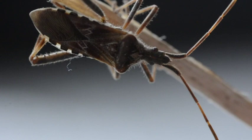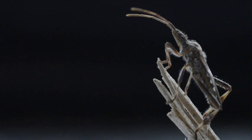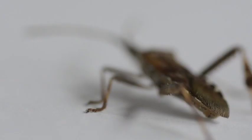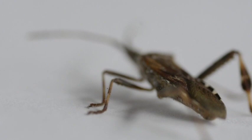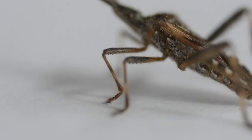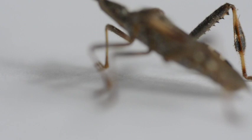The Western Conifer Seed Bug is a true bug from the order Hemiptera. It belongs to the family of Corydae, or leaf-footed bugs. The name alludes to the small, flat enlargements on the hind legs that are similar in appearance to leaves.